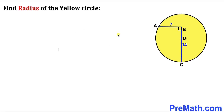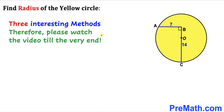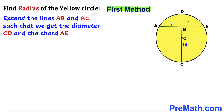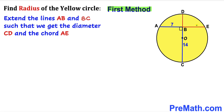We are going to share three interesting methods, so please watch the video till the very end and let me know which method you like the most. In the first method, we are going to extend line segments AB and BC, and as a result we get chord AE and diameter CD.